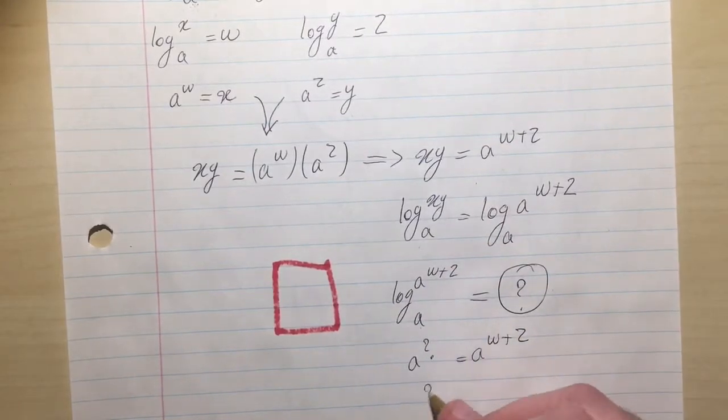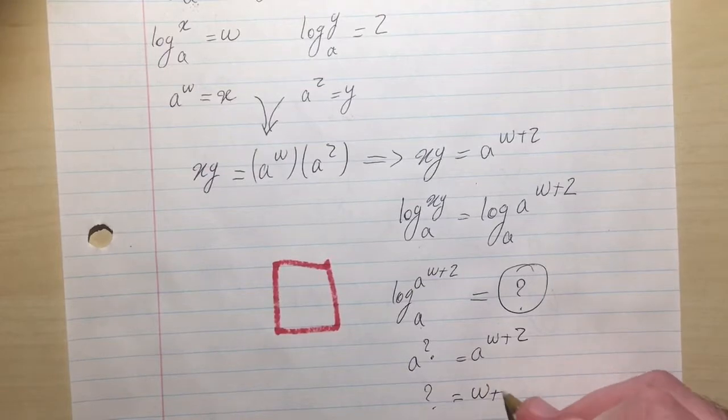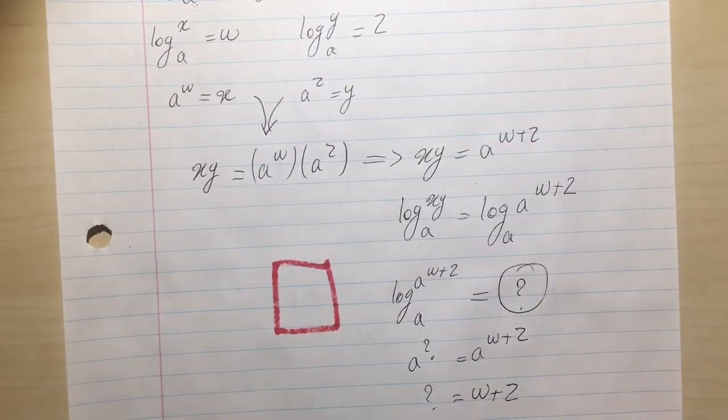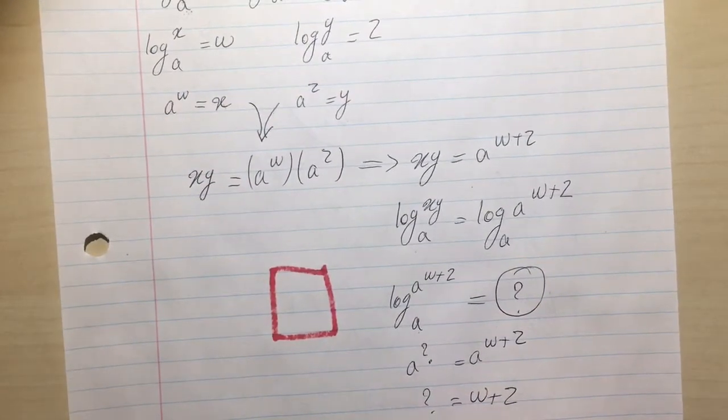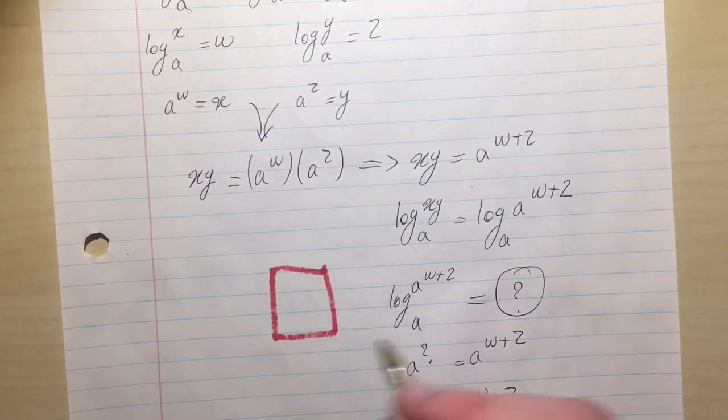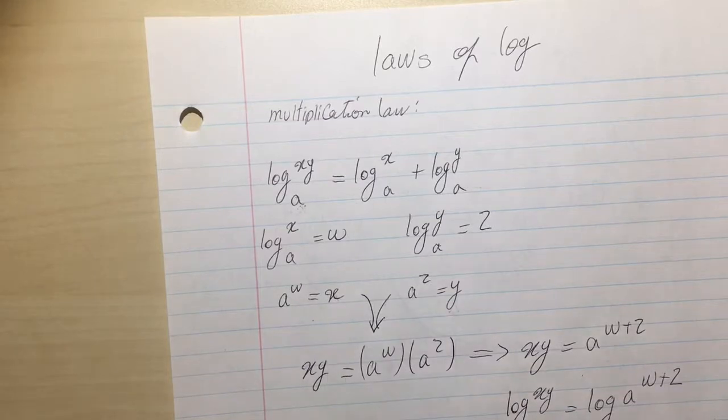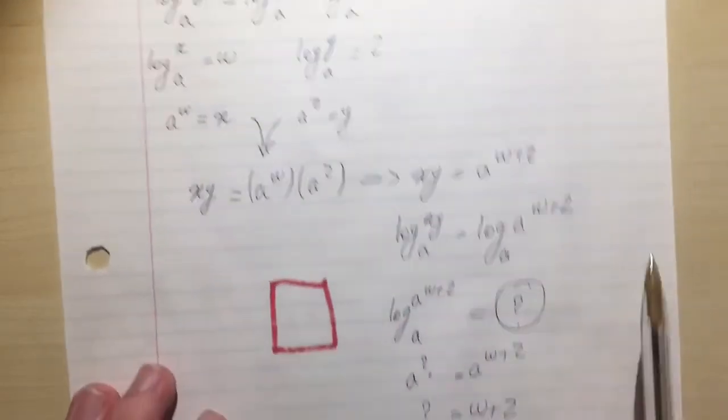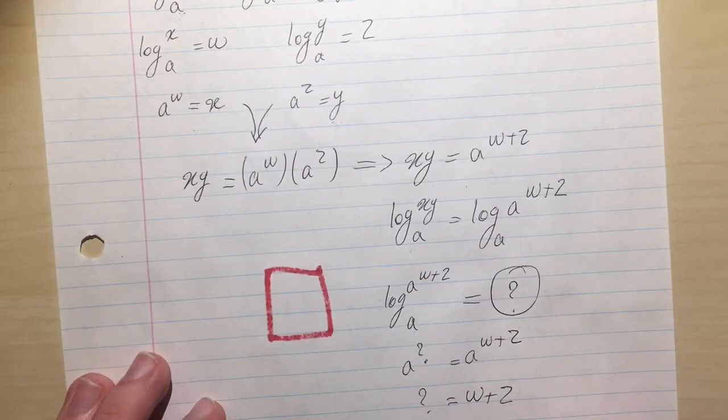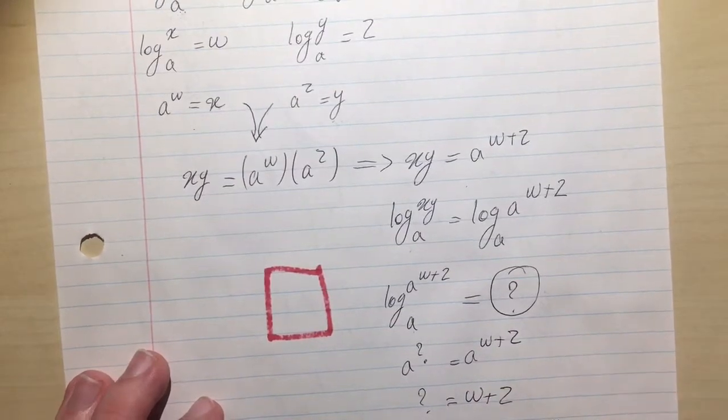So question mark is w plus z. If you rewrite w and z from these descriptions, you get log x base A plus log y base A.